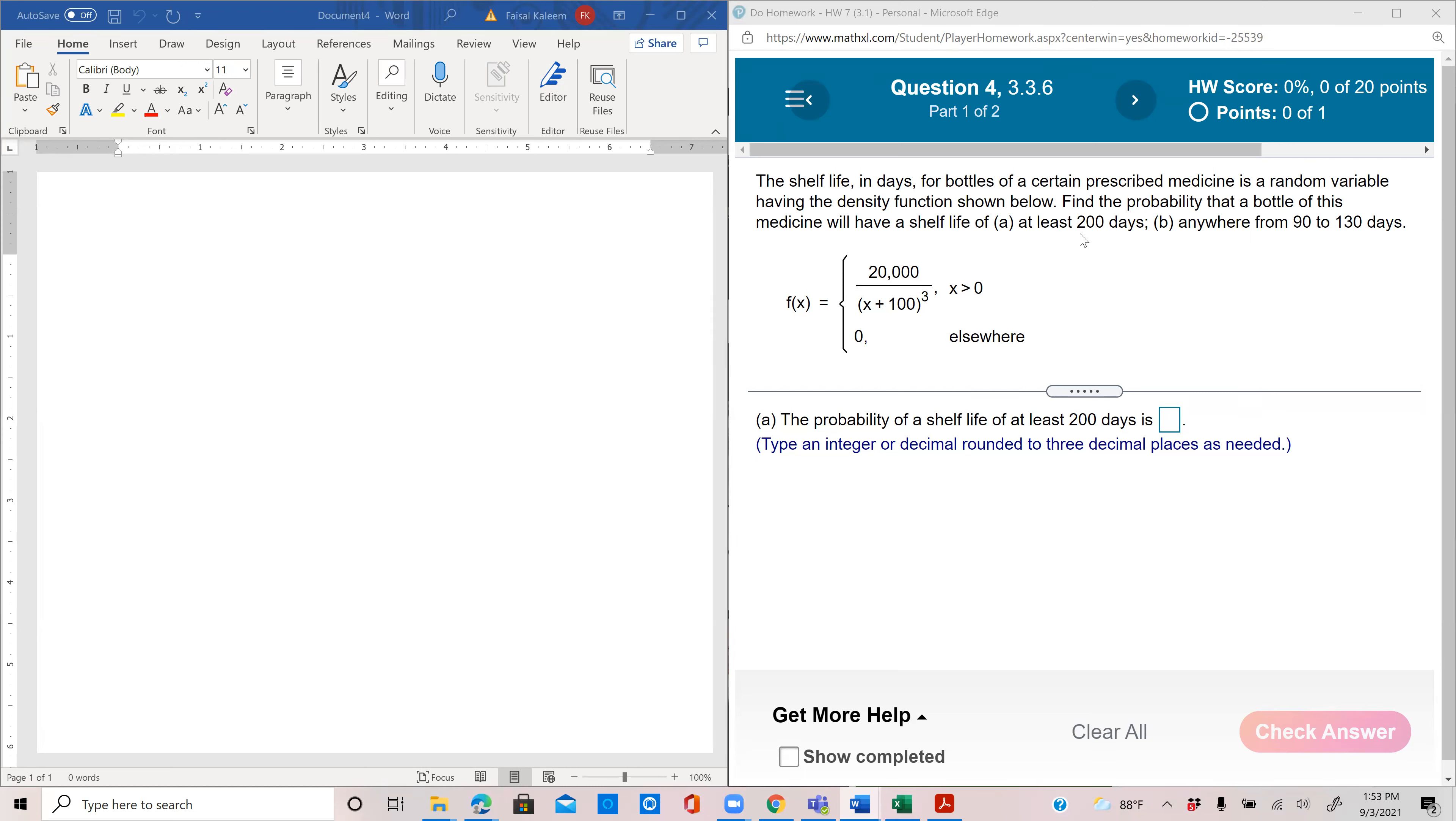At least 200 days means you have to find probability x is greater than or equal to 200. In a continuous variable, whether you say greater than or equal to 200 or greater than 200, it's the same thing.